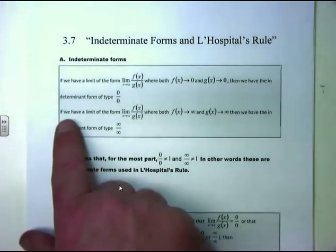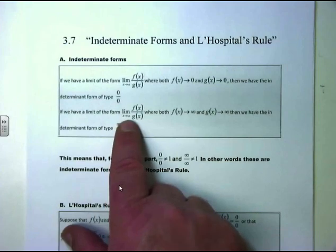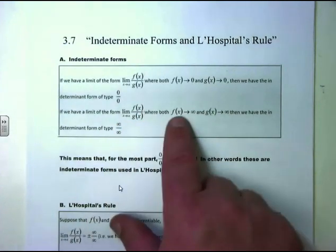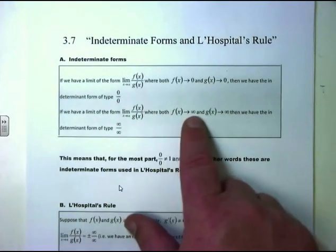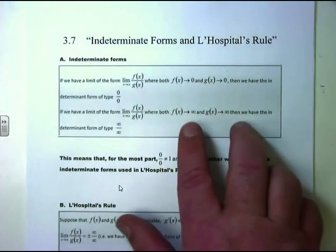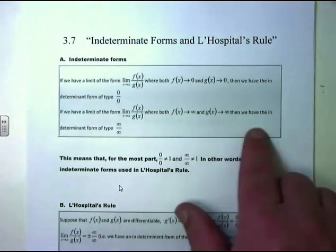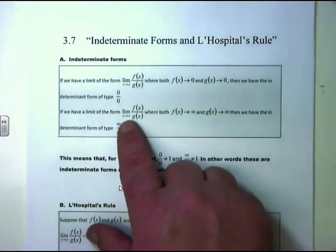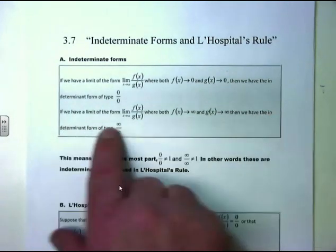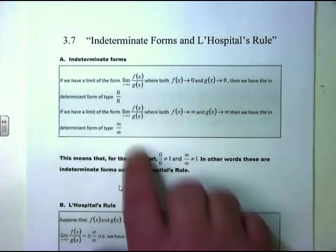Similarly, if we have the limit as x approaches a of f(x) over g(x), where both f(x) and g(x) go to infinity — it doesn't matter, it could be plus or minus infinity — then we have the indeterminate form of infinity over infinity.